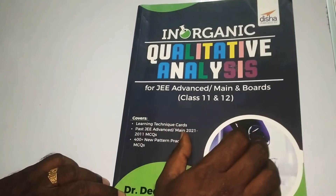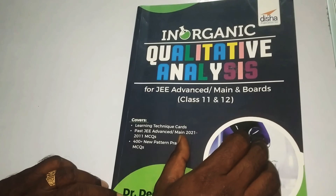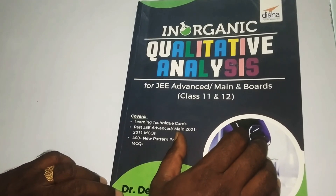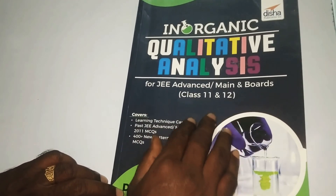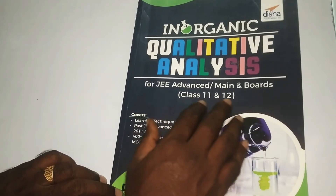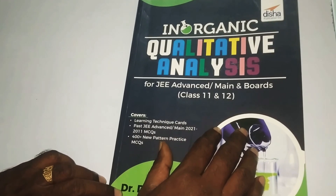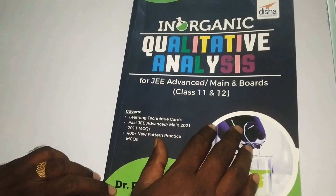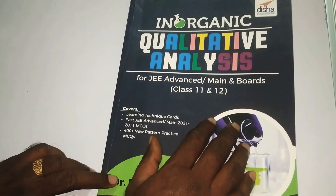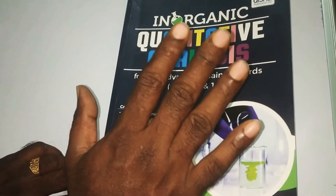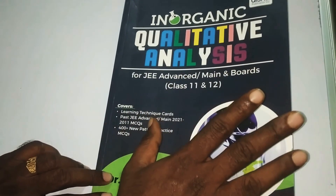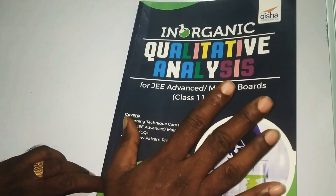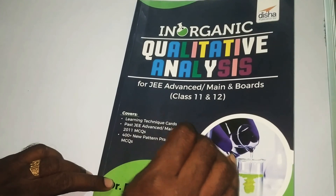Each and every chapter provides detailed theory and all the reactions and reagents are covered. The contents involve all the chemical reactions involved in inorganic chemistry. At the end of each chapter, a lot of multiple choice questions are given to evaluate our understanding. After reading this book, if you want to study the s-block elements, p-block elements, d-block elements, and f-block elements, you will understand inorganic chemistry at an entirely different level.